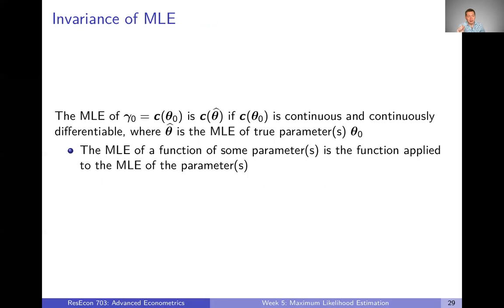And then finally, the maximum likelihood estimator is invariant to one-to-one transformations or functional transformations. The idea here is suppose you want to know the maximum likelihood estimator of gamma zero, which is a function of some parameters. You don't want to necessarily know the maximum likelihood estimator of the parameters themselves, but you want to know the maximum likelihood estimator of a function of parameters. Well, that maximum likelihood estimator is just going to be the function or functions applied to the maximum likelihood estimators of the thetas. So in other words, you want to find the maximum likelihood estimator of a function of parameters. That's going to be equal to the function of the maximum likelihood estimator of the parameters.